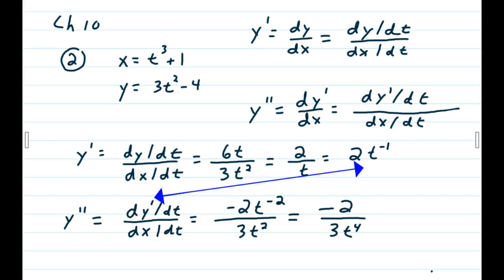Now in order to find the second derivative, we have to find the derivative of the derivative with respect to t over dx/dt. So y prime was 2t to the negative 1. The derivative of that would be kicking your power out front. You get negative 2t, drop your power down 1, negative 2t to the negative 2.